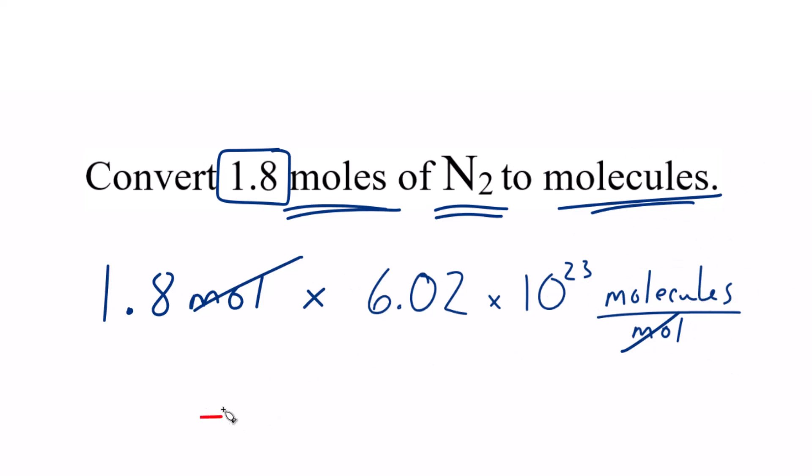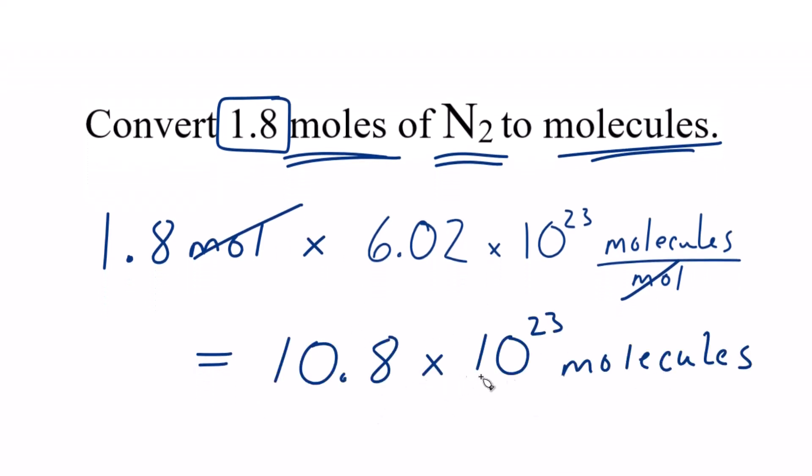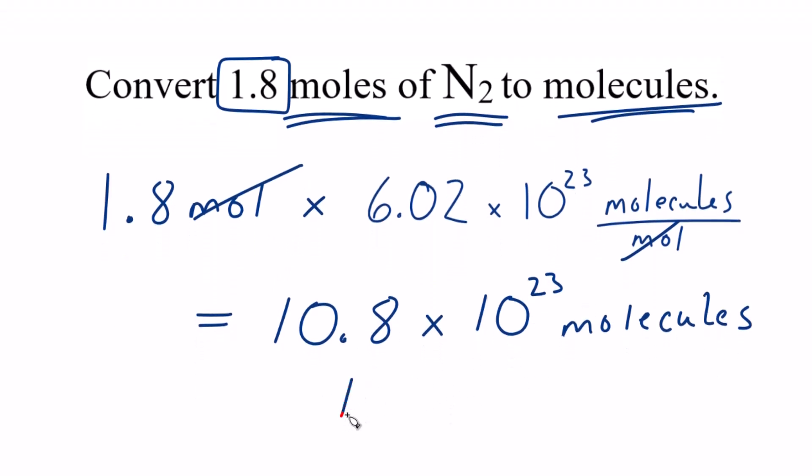So 1.8 times 6.02 times 10 to the 23rd, that gives us 10.8 times 10 to the 23rd molecules, these N2 molecules. And you could also write this as 1.08 times 10 to the 24th, if you wanted to do that as well. That's also correct.